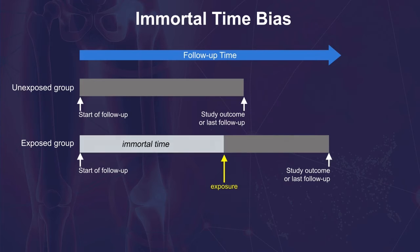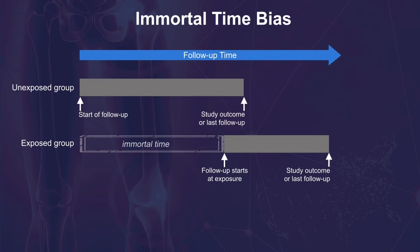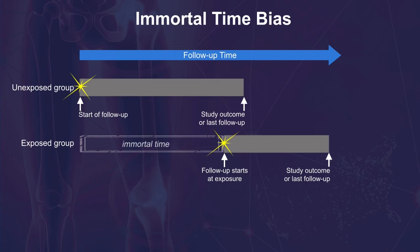Some attempt to eliminate this bias by simply excluding the immortal time. In this approach, the time between the beginning of study follow-up and the identification of the risk factor or exposure is ignored, and follow-up is started from the time of the exposure. The problem is that the follow-up for these exposed patients starts much later than for the unexposed patients, and the time period following the initial surgery is unaccounted for.